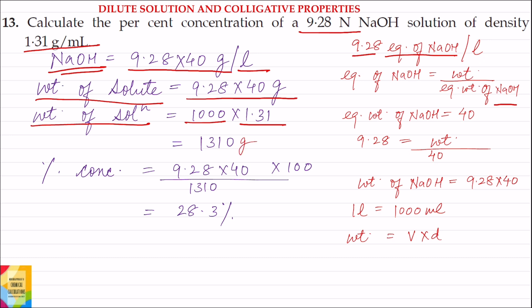Now we know the weight of solute and we know the weight of solution. So percentage concentration of the solution will be equal to weight of solute divided by weight of solution into 100, and this is equal to 28.3 percent.